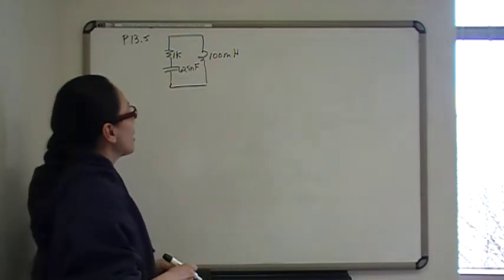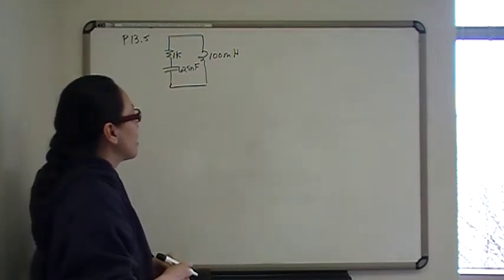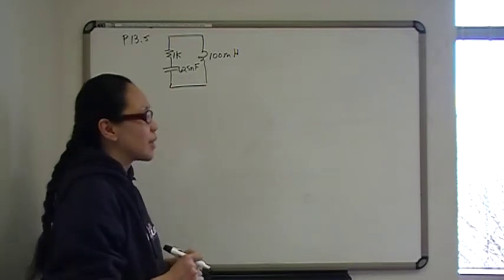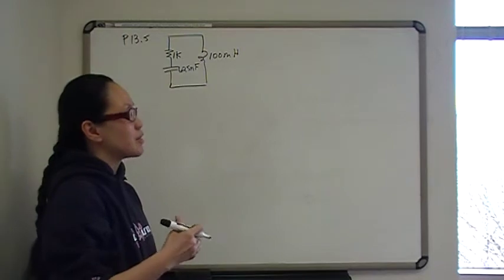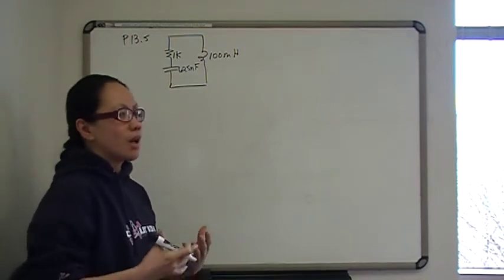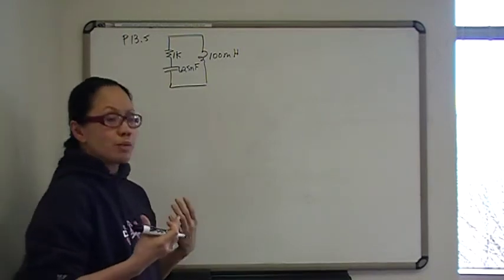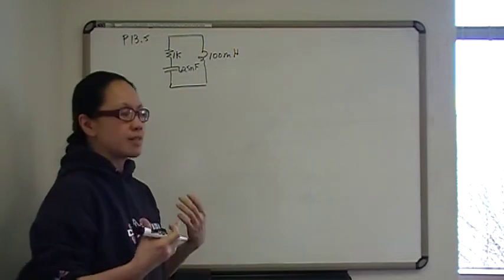First of all, we're not going to actually transform with numbers. We're going to use generic letters and find the impedance all the way to the end. And the reason is to preserve the relationships between R, L, and C because it's important to see that.